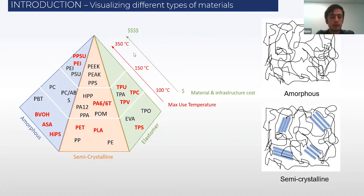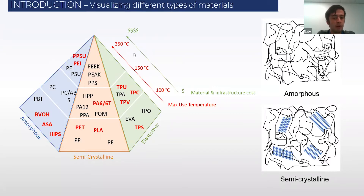With all of these materials, as you go up the pyramid, you're able to use these 3D printed parts at higher temperatures, as well as in more harsh environments, depending on whether you need chemical resistance and so on.